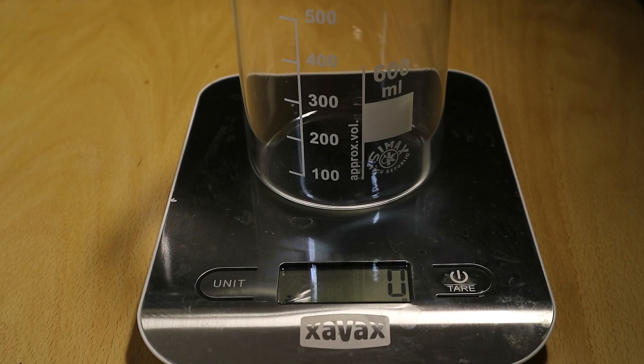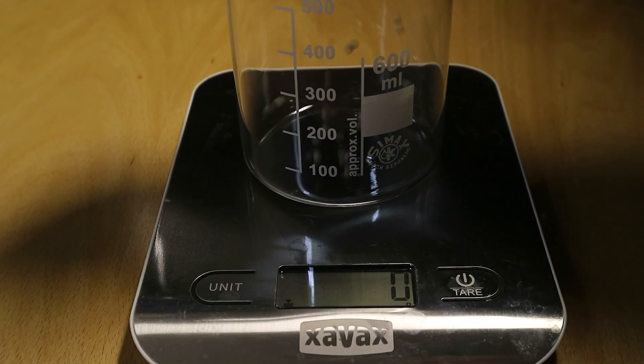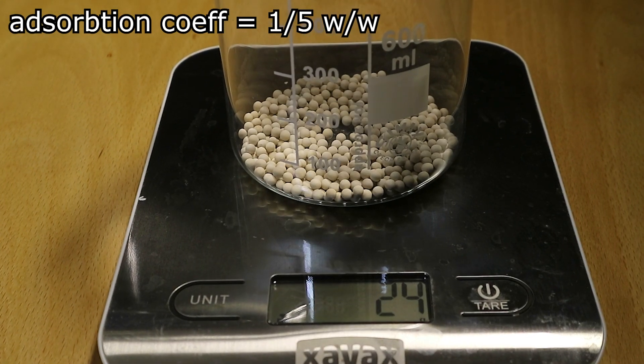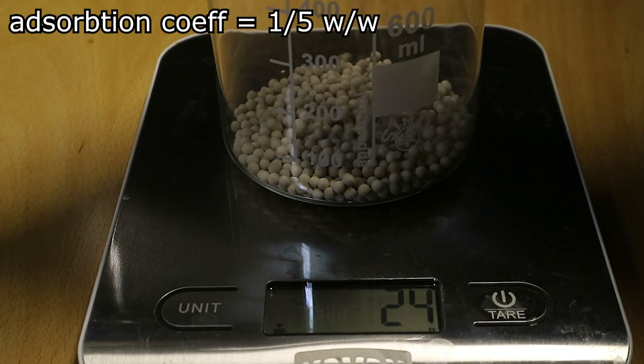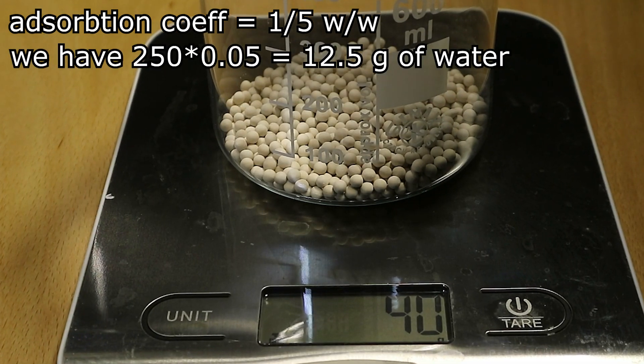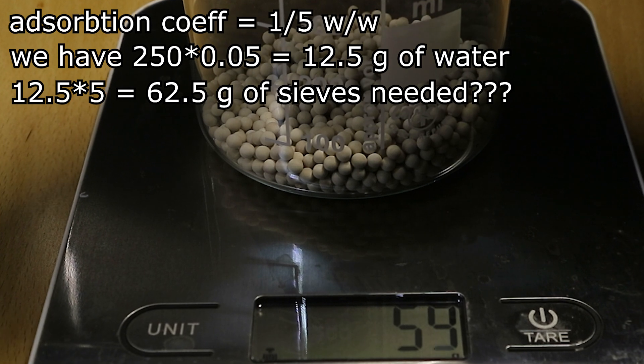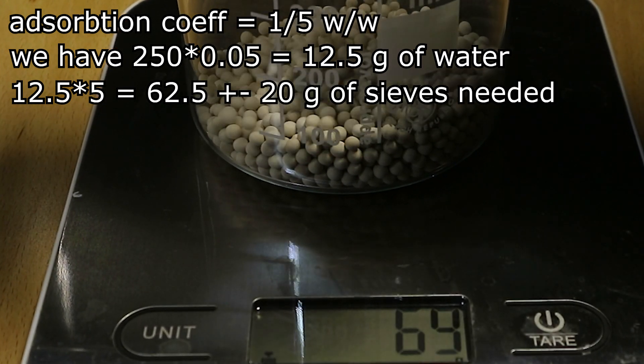For the amount that you need basically you have to take into account that molecular sieves absorb around 20% of their own weight in water and then take into account that we have somewhere around 5% concentration in the ethanol. Take that number multiply it by 5 and then as a good not chemist add a bunch extra just to make sure.